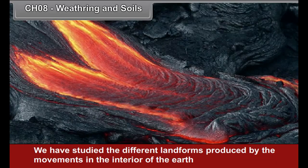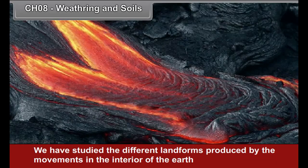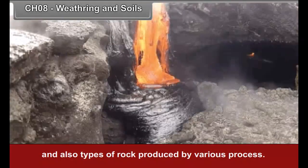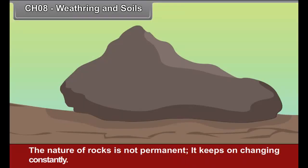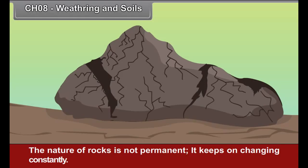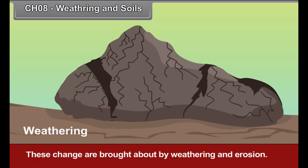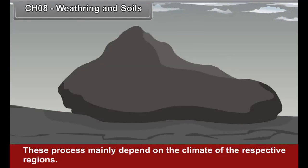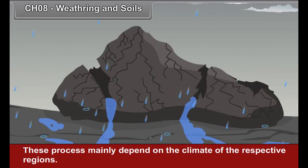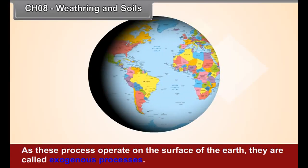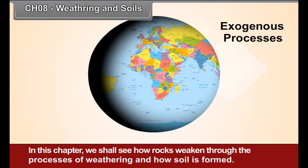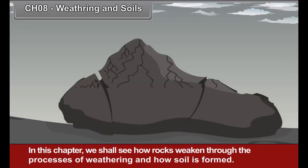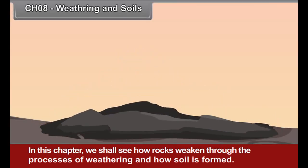Chapter 8: Weathering and Soils. We have studied the different landforms produced by the movements in the interior of the earth and also types of rock produced by various processes. The nature of rocks is not permanent; it keeps on changing constantly. These changes are brought about by weathering and erosion, which mainly depend on the climate of respective regions. As these processes operate on the surface of the earth, they are called exogenous processes. In this chapter, we shall see how rocks weaken through the processes of weathering and how soil is formed.